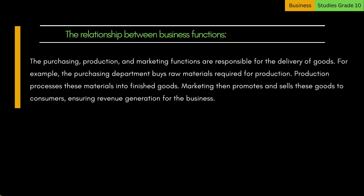The purchasing, production, and marketing functions are responsible for the delivery of goods. For example, the purchasing department buys raw materials required for production. Production processes these materials into finished goods. Marketing then promotes and sells these goods to consumers, ensuring revenue generation for the business.